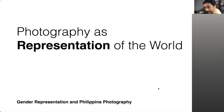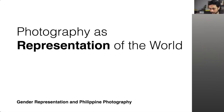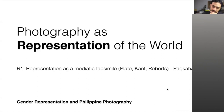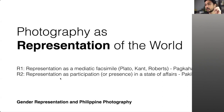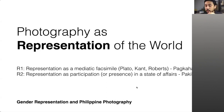Now we go to photography as representation of the world. We've discussed representation: pagkakahawig and pakikibahagi. Now we're connecting it with photography — since what we saw was a painting. We've labeled these: R1 is representation as mediatic facsimile — pagkakahawig. And R2 is representation as participation — being part of — pakikibahagi.